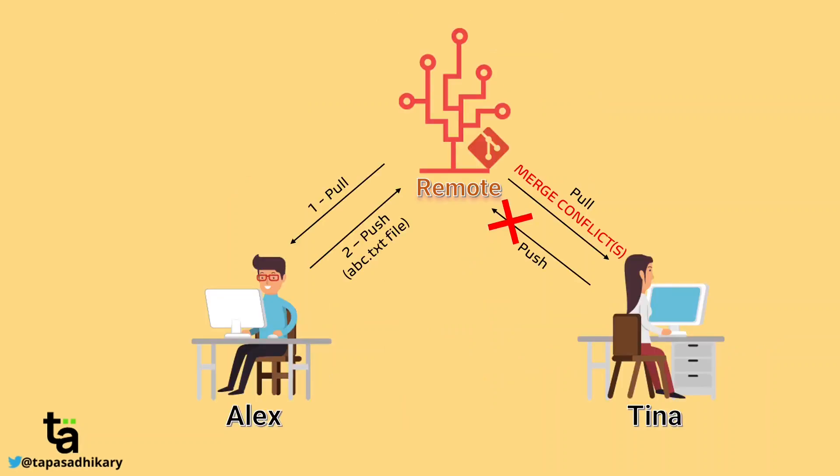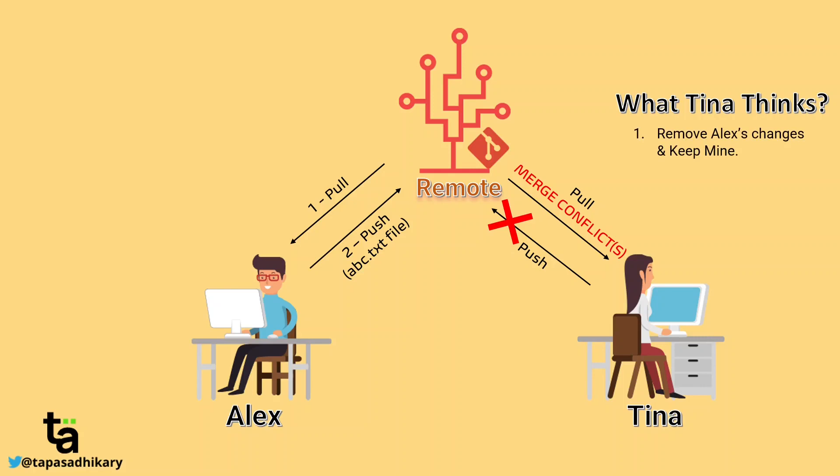Let's get back to our story and see what Tina is going to do. Tina thinks: should I remove Alex's changes and keep mine? Should I keep Alex's changes and remove mine? Should I keep both, or should I remove both? What exactly Tina should do depends entirely on the use case of the application they're working on. If Tina feels Alex's changes are no longer valid after her changes, she'll remove Alex's. If both are valid, she'll keep both — or she may remove both. That call is hers to make.